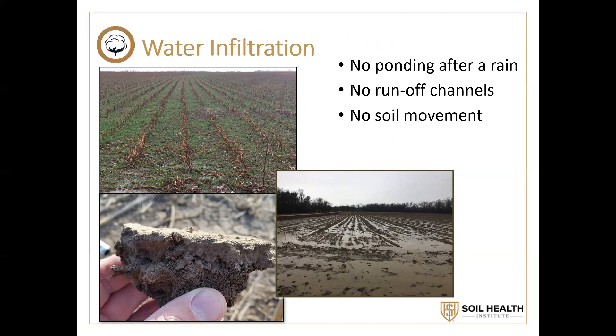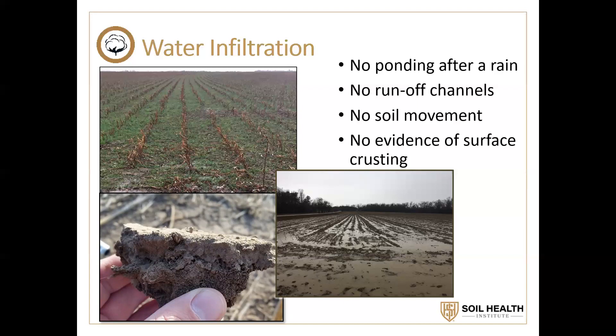Unfortunately in agriculture, we tend to accept degraded conditions as being the norm rather than questioning why is my water ponding, why isn't it soaking in, why am I getting surface crusting? What can I do to eliminate that? We tend to accept that as a norm when it isn't the norm. The upper picture is really what we should be seeing — we shouldn't see any evidence of surface crusting.